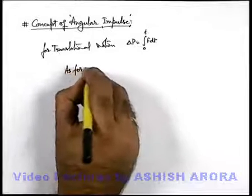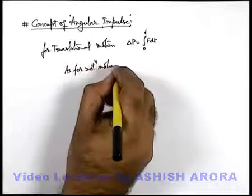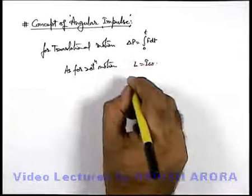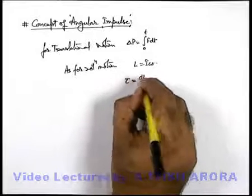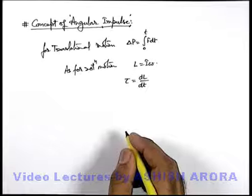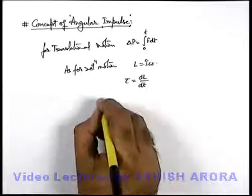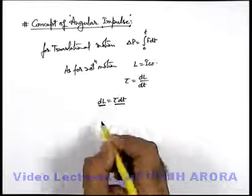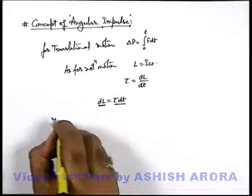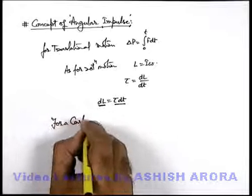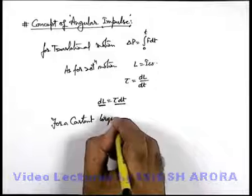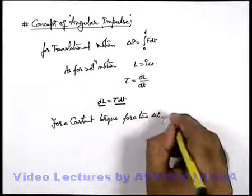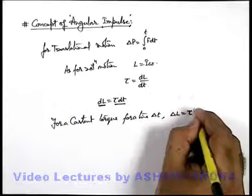For rotational motion of a rigid body, we know that angular momentum is given as I omega, and the net torque applied on a body can be written as the rate of change of angular momentum, d L by d t. Here we can write d L equals tau d t, which is the change in angular momentum due to the application of torque on a body. So for a constant torque applied for a time delta t, the net change in angular momentum is tau delta t.